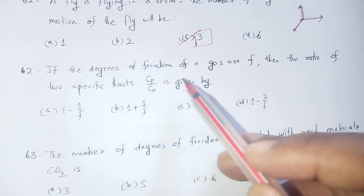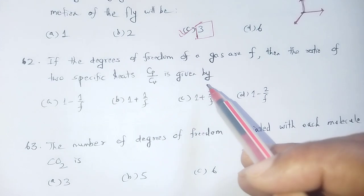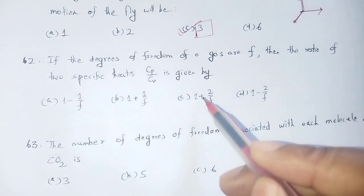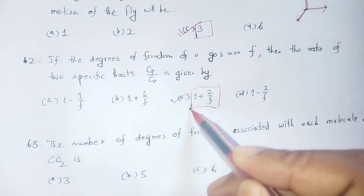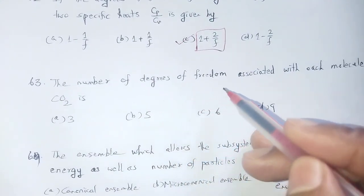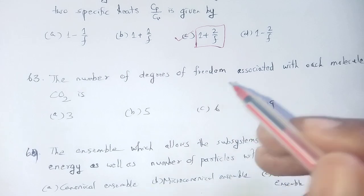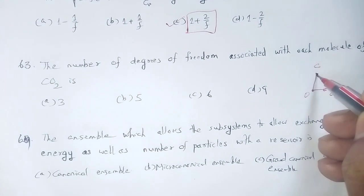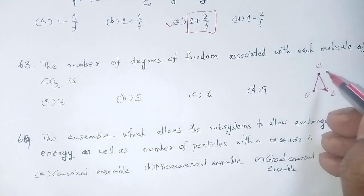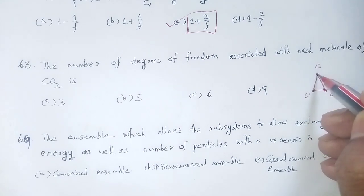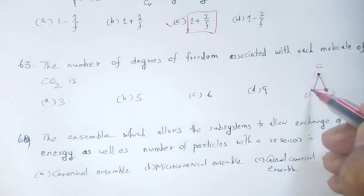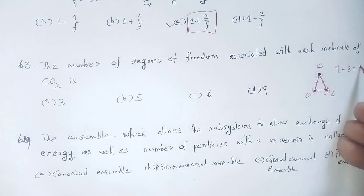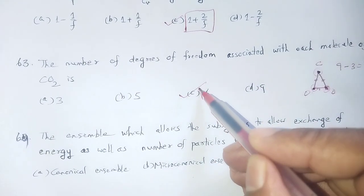Question 60: If the degrees of freedom of a gas are F, the ratio of specific heats CP/CV = 1 + 2/F. Question 61: The number of degrees of freedom associated with each molecule of carbon dioxide. CO2 is a triatomic linear molecule. Each atom contributes degrees of freedom, giving 8 total degrees of freedom. Option number C is the correct one.